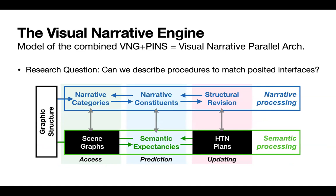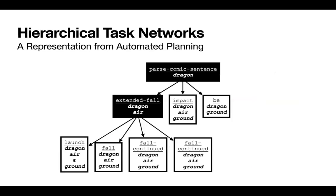On the updating side, the situation model can be well described by an HTN plan. We know that event structure has this kind of hierarchical quality, so a reasonable hypothesis is that HTN plans - hierarchical task networks, a representation of automated planning - can serve as a computational semantic model of a situation model. You can imagine an HTN parse of the comic sequence: as we are reading this comic, we are building this HTN-like structure that gets refined with each panel.